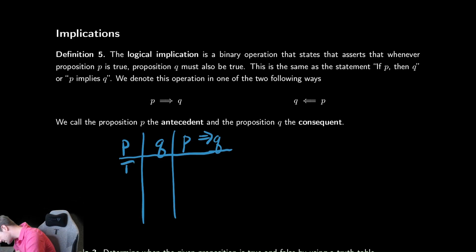So let's break down our columns, same as we did. True, true, false, false. False, true, false, true. False. So we have P implies Q.